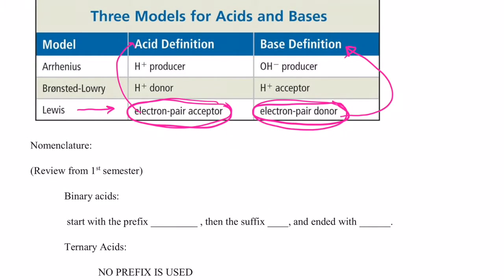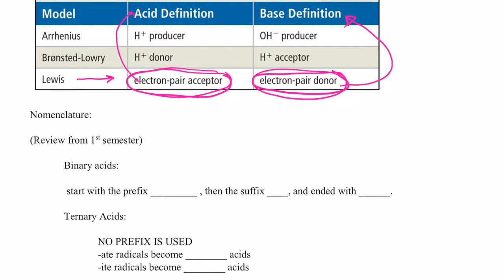All right, let's talk about some nomenclature. If you remember, at the beginning of the year, we learned how to write names and formulas for ionic compounds, for covalent compounds, and for acids. You might want to go back in your notes and review in your videos how to name and write formulas for acids. So there are two types of acids that we learned how to name and write formulas for. Binary and ternary acids.